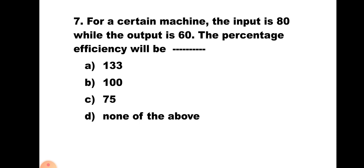Question number 7: For a certain machine, the input is 80 while the output is 60. The percentage efficiency will be — A) 133, B) 100, C) 75, D) none of the above. Efficiency is the ratio of output to input expressed as a percentage. So 60 upon 80 multiplied by 100 gives 75. Hence the correct answer is C) 75.